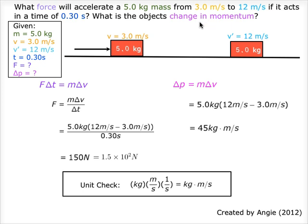Each clue is highlighted in different colors to show the information it tells. The mass of the object is 5 kg, initial velocity is 3.0 m per second, final velocity is 12 m per second, and the time given is 0.30 second. We are looking for the force and the change in momentum.